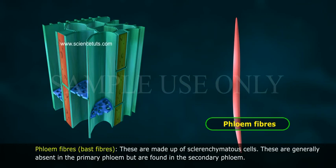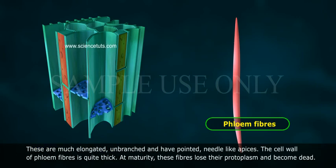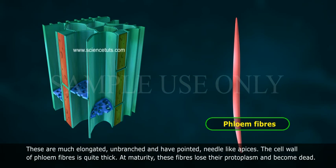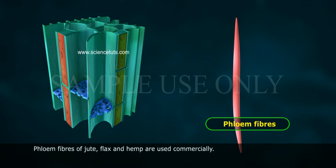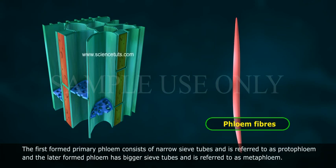Phloem fibers are made up of sclerenchyma cells. These are generally absent in the primary phloem but are found in the secondary phloem. They are much elongated, unbranched, and have pointed needle-like apices. The cell walls of phloem fibers are quite thick; at maturity, these fibers lose their protoplasm and become dead. Phloem fibers of jute, flax, and hemp are used commercially. The first formed primary phloem consists of narrow sieve tubes and is referred to as protophloem, and the later formed phloem has bigger sieve tubes and is referred to as metaphloem.